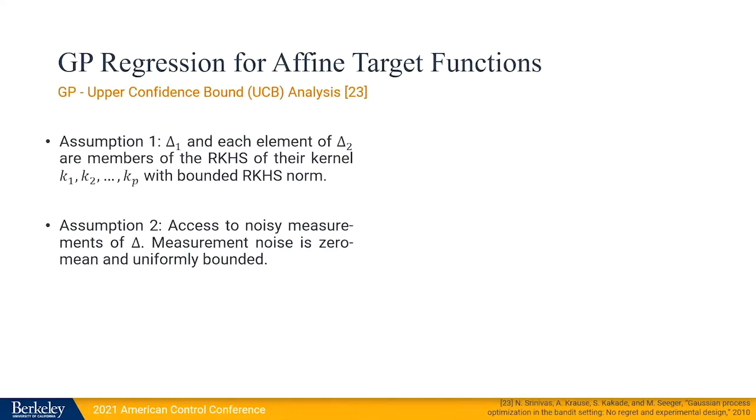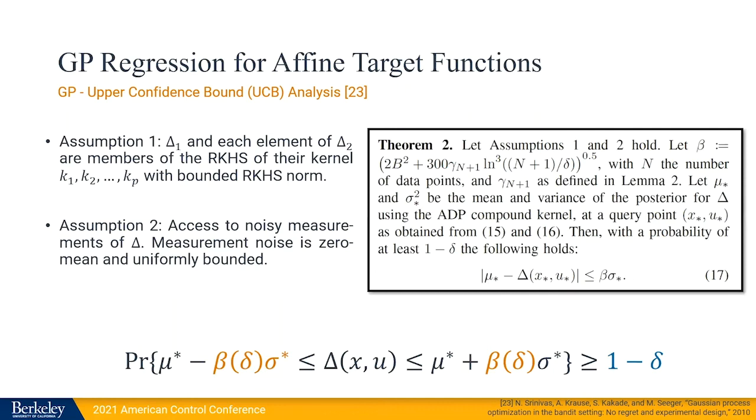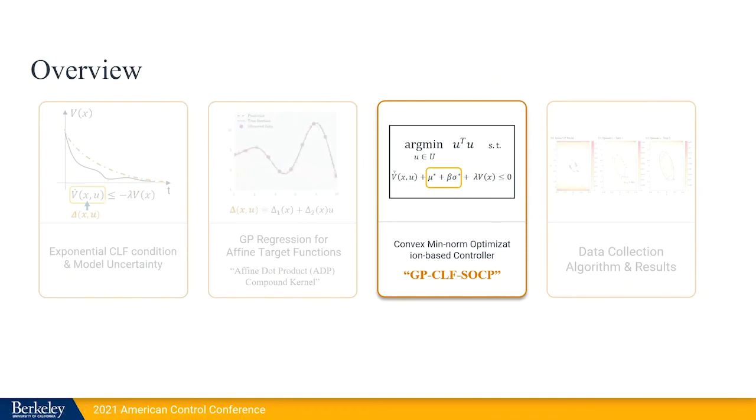Now we're going to make use of the Gaussian process upper confidence bound analysis to build confidence bounds on our uncertainty delta. Assumption 1 says that delta-1 and each element of delta-2 have to be members of the reproducing kernel Hilbert space of the respective kernels with bounded RKHS norm. And assumption 2 says that we have access to noisy measurements of delta and that this measurement noise is zero mean and uniformly bounded. So under these assumptions, what we have is a probabilistic bound on the value of the uncertainty. So we can choose a probability 1 minus delta and we know that with that probability, our uncertainty is going to lie between these two bounds.